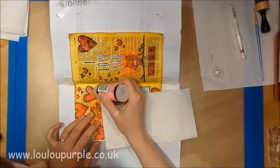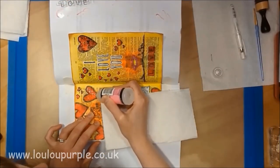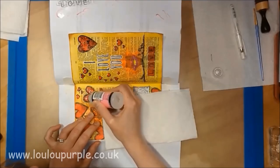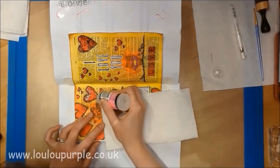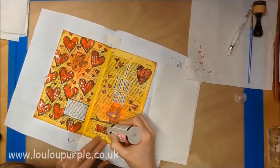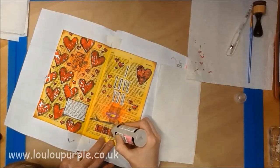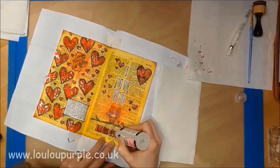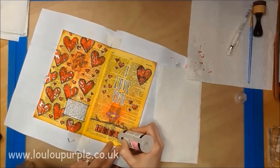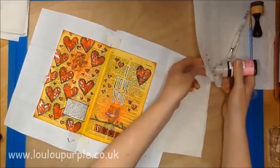I am now using my Glossy Accents to add a shine to all my hearts, but I don't want this to be very dimensional as it is a book page, so I am applying the Glossy Accents and just pulling it down with the nib so that it's not thick, it's quite a thin layer.